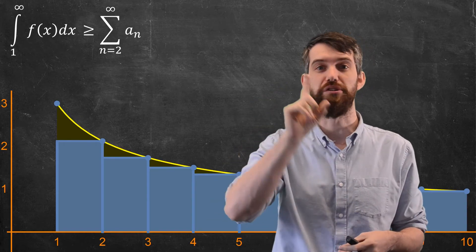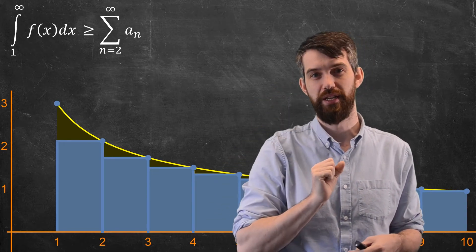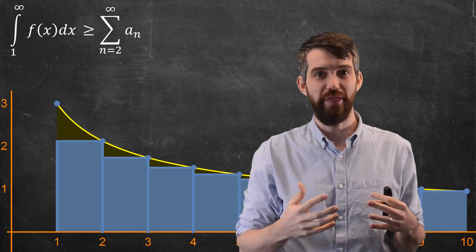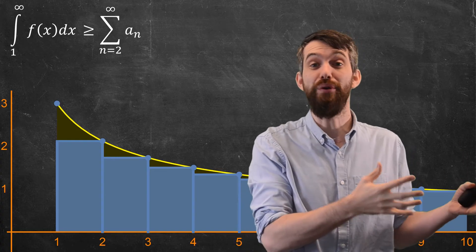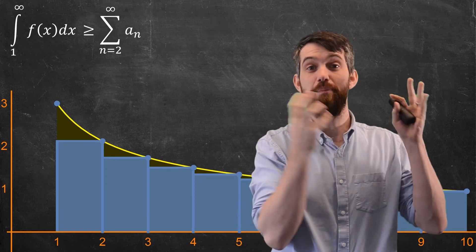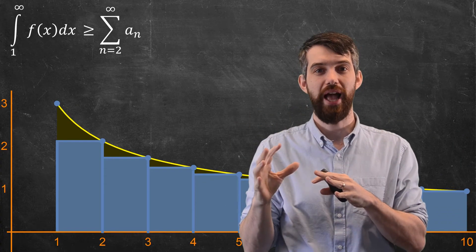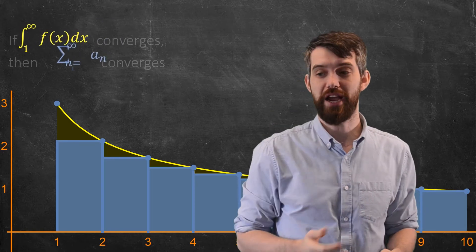Imagine the improper integral not diverges, imagine it converges. So the improper integral is converging. Well, in that scenario, that tells me that it is bigger than the series. So if the bigger thing converges, the smaller thing, the series must converge as well. So I get the other side of my theorem.